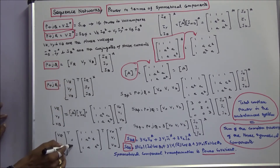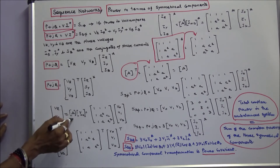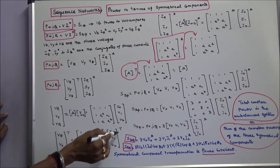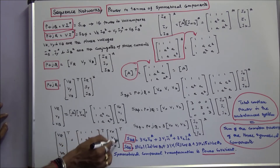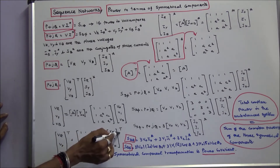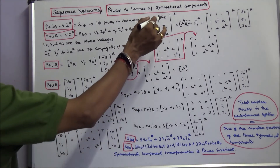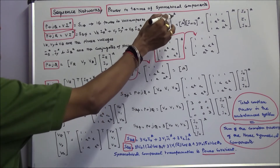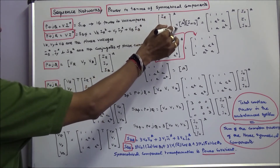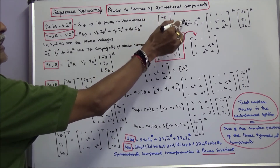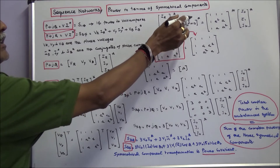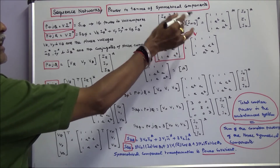The transpose equals A transpose times the sequence voltage matrix transpose. Similarly, the phase current conjugate matrix is equal to the A conjugate matrix times the sequence current conjugate matrix.